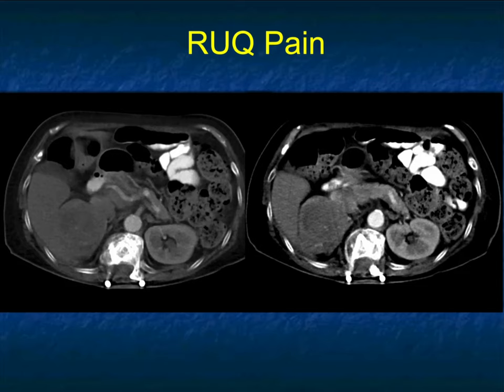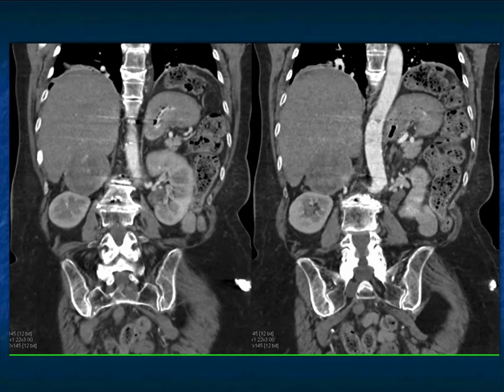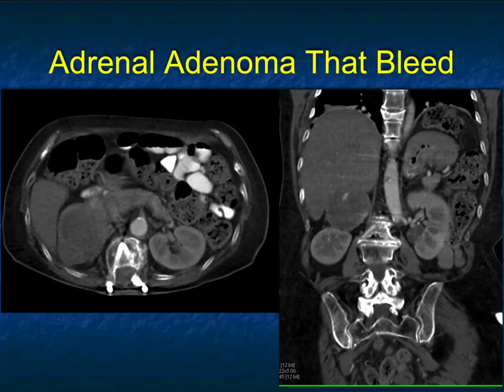Here's another case — right upper quadrant pain, and there's a large, high-density mass in the right adrenal gland with acute pain. The requisition said rule out pancreatitis and rule out acute cholecystitis — a common presentation. But it's a big mass with active bleeding. The differential includes adenoma and others. It's hard to be specific; you get lab values and more history. This was eventually resected and turned out to be an adenoma that bled.